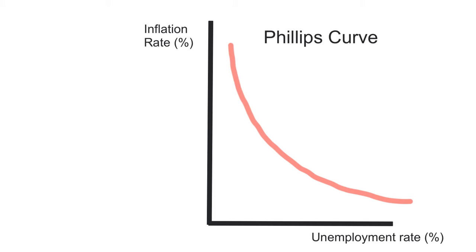The Phillips curve said that governments basically had a menu of policy choices. If they were to have a low rate of inflation, they were likely to have a higher rate of unemployment. In order to drive down unemployment, governments could make trade-offs — accepting a higher rate of inflation. You've seen this before even though you may not recognize it, so let's take a look at the Keynesian ADAS diagram to put this into perspective.